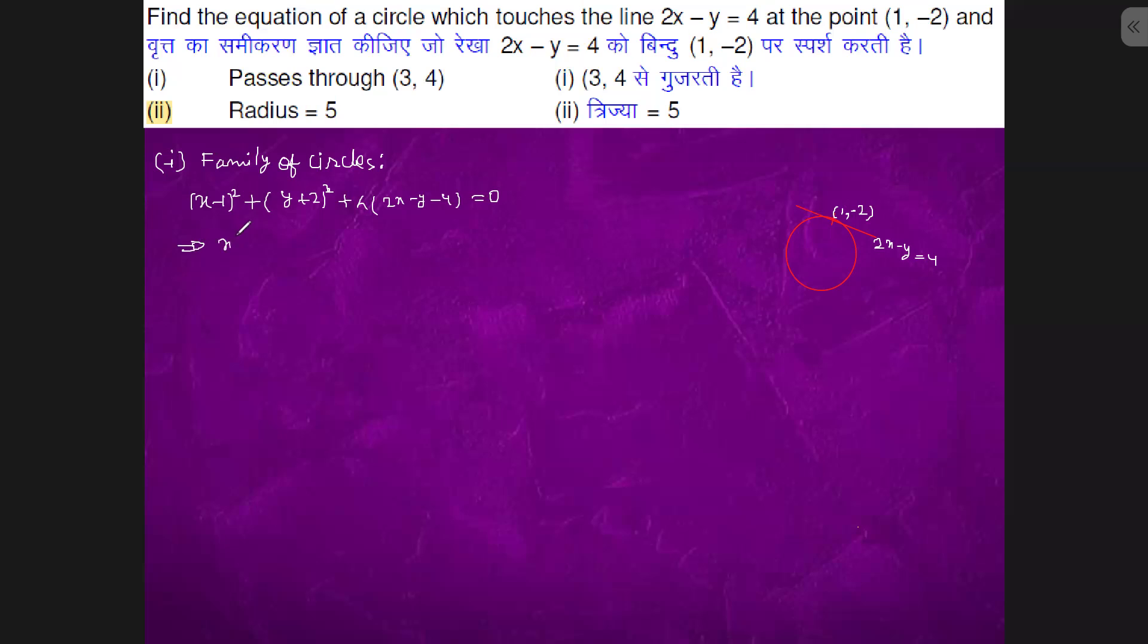So this could be expanded as x² + 1 - 2x + y² + 4 + 4y + 2λx - λy - 4λ = 0.